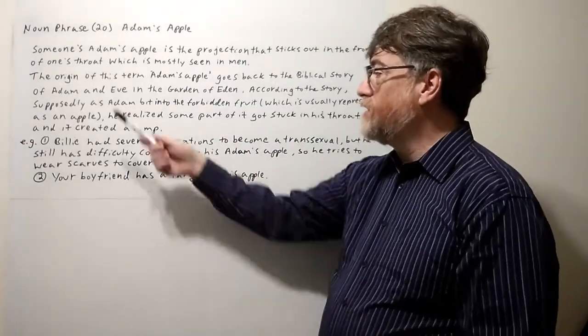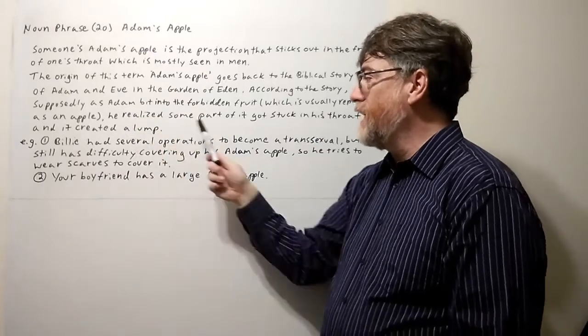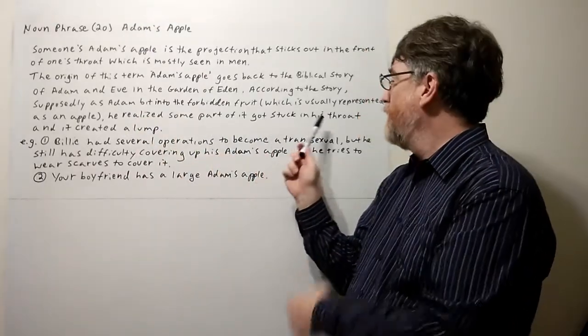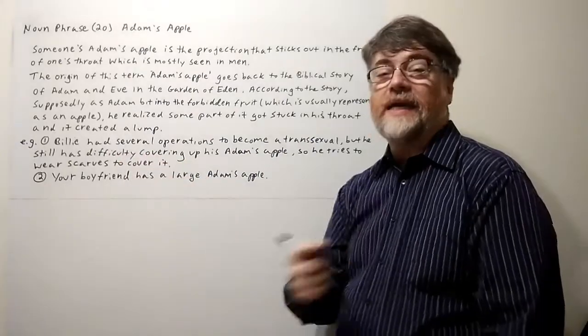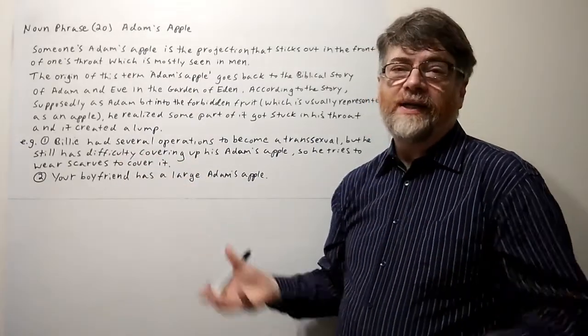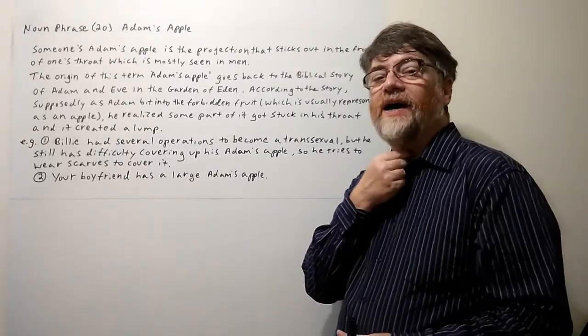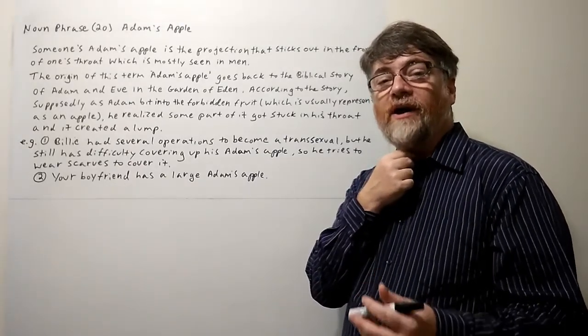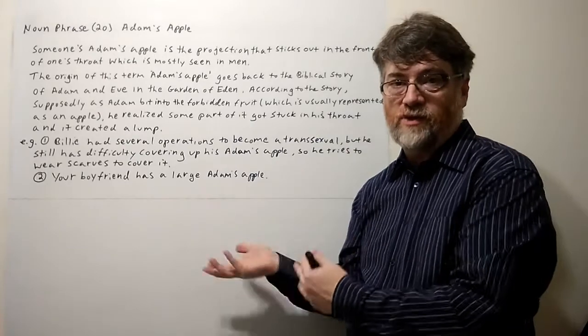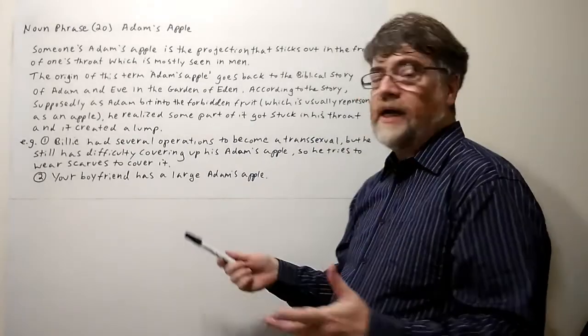So as he did it, he realized some part of it got stuck in his throat and it created a lump. So that's what they say according to the story. That's why men's Adam's apple sticks out larger according to the story.